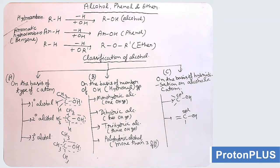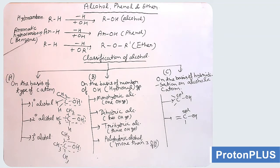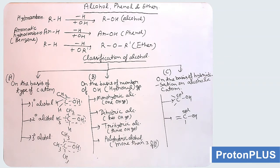Alcohol: when we take a hydrocarbon and the hydrogen is replaced by an OH group, the compound is alcohol, that is ROH. Similarly, if we take an aromatic hydrocarbon, that is benzene (ArH), and this hydrogen is replaced by an OH group, then the compound is ArOH, that is phenol — aromatic alcohol. Similarly, if H of a hydrocarbon is replaced by an alkoxy group, that is OR group, then the compound obtained is ROR, that is ether.